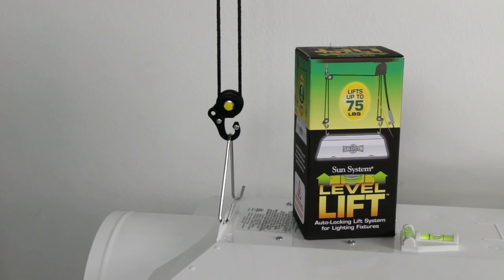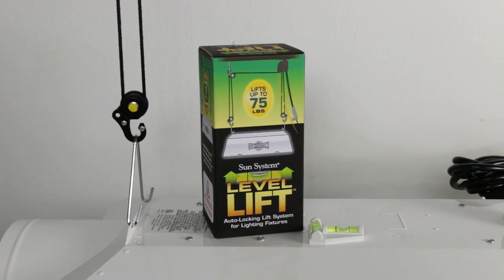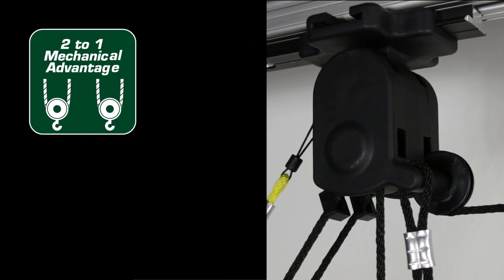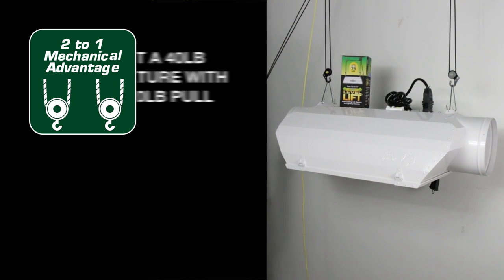The new LevelLift incorporates a simple pulley system to eliminate the time-consuming process of finding that perfect level position. Its 2 to 1 mechanical advantage allows you to lift a 40-pound fixture with a 20-pound pull, all while keeping the fixture level.